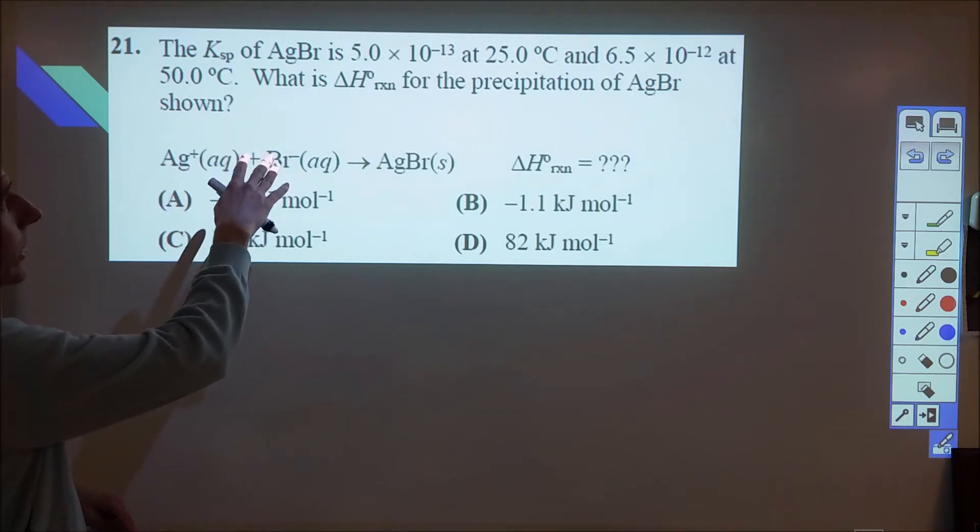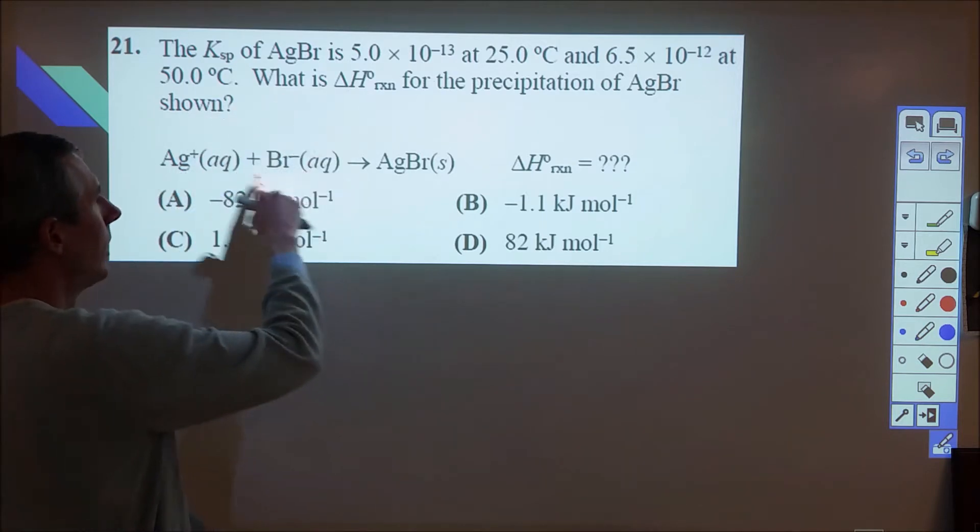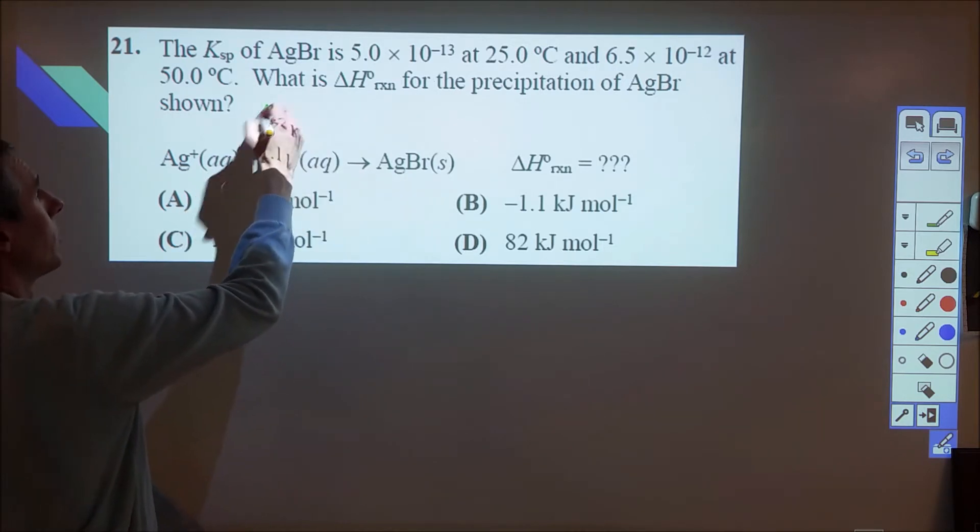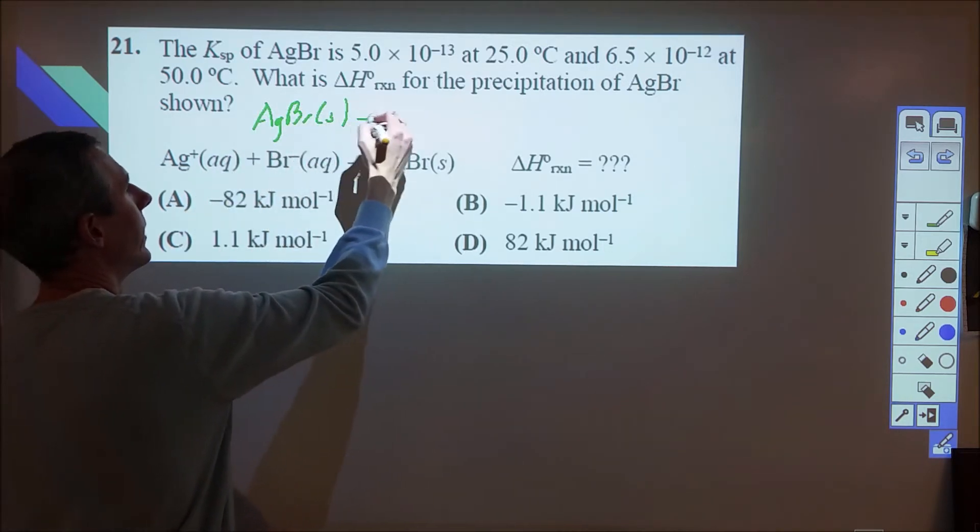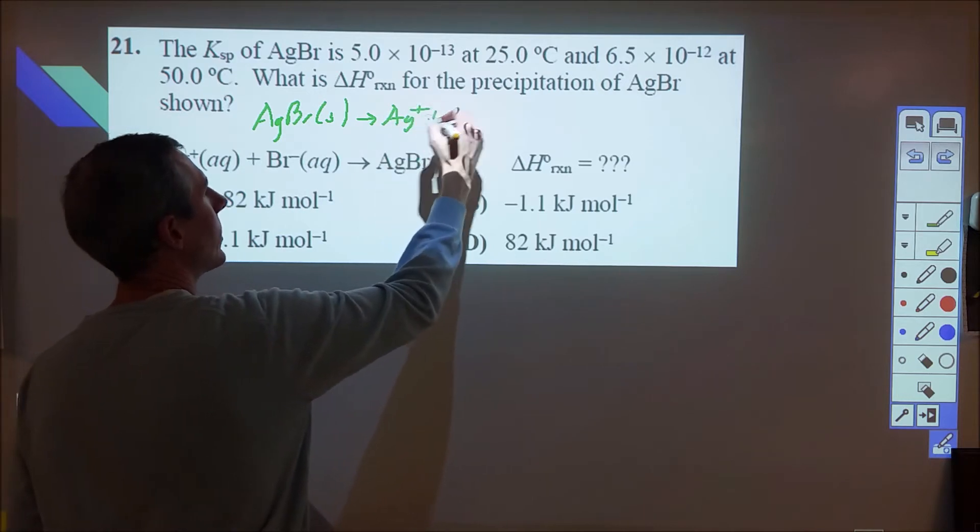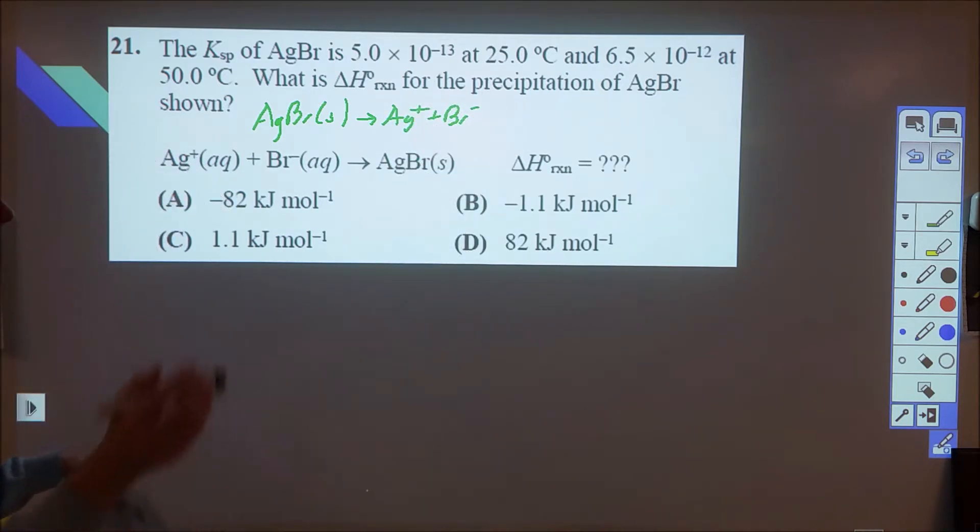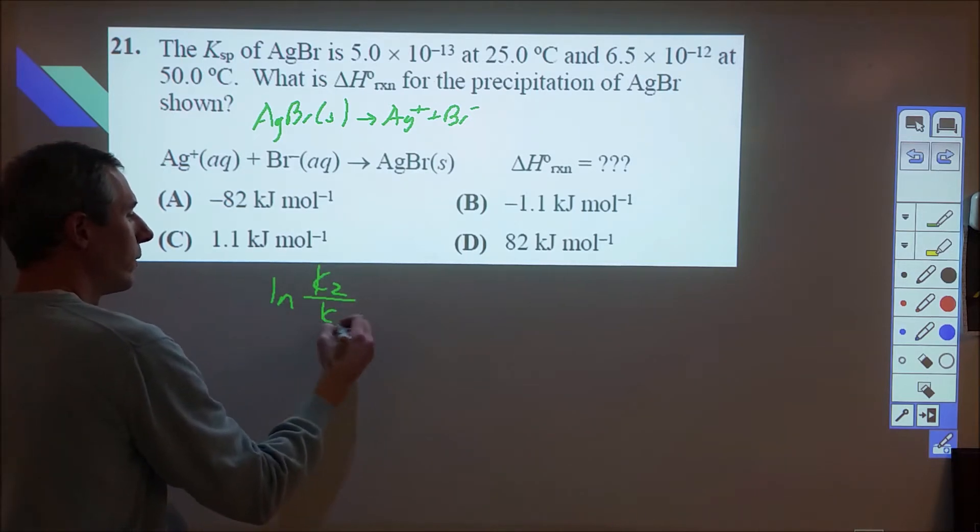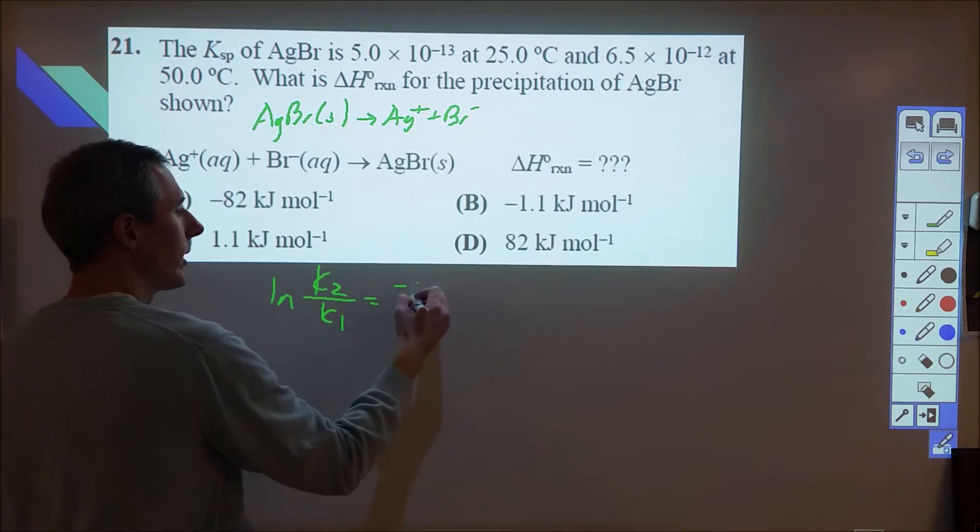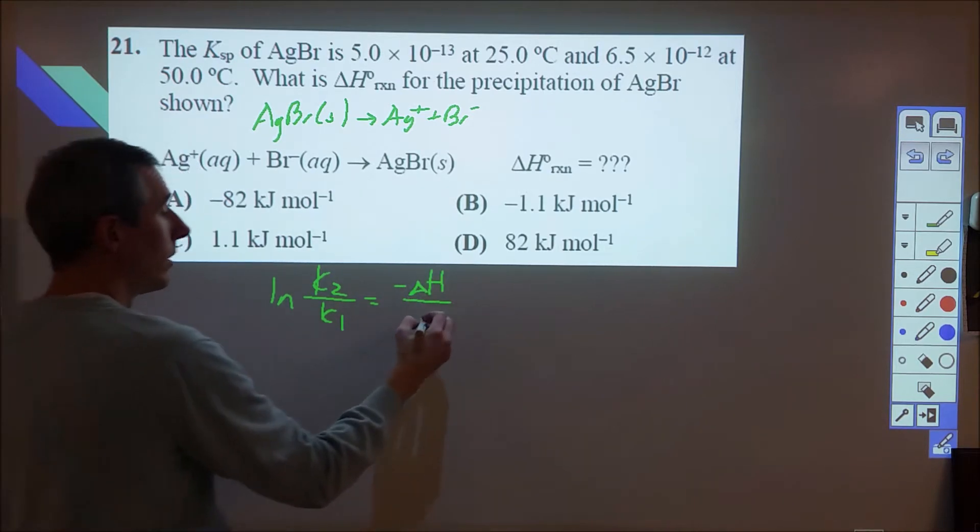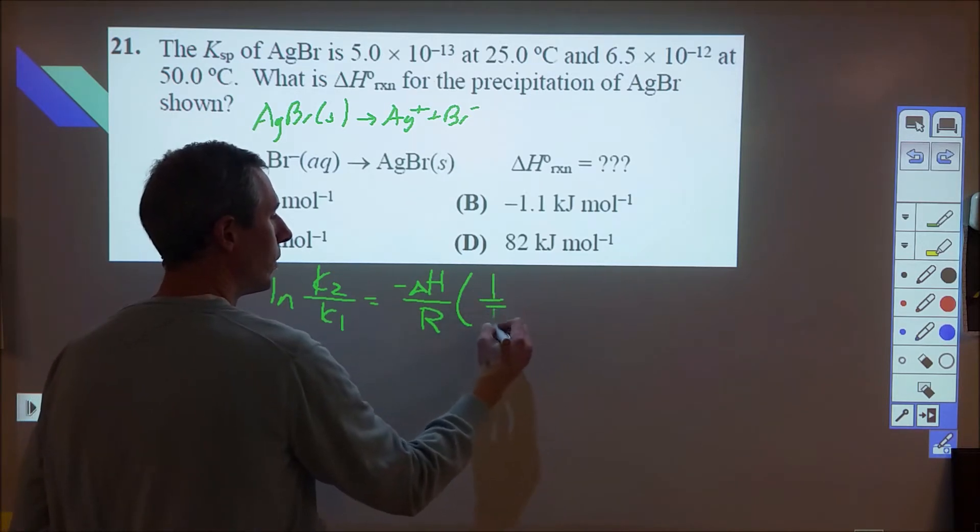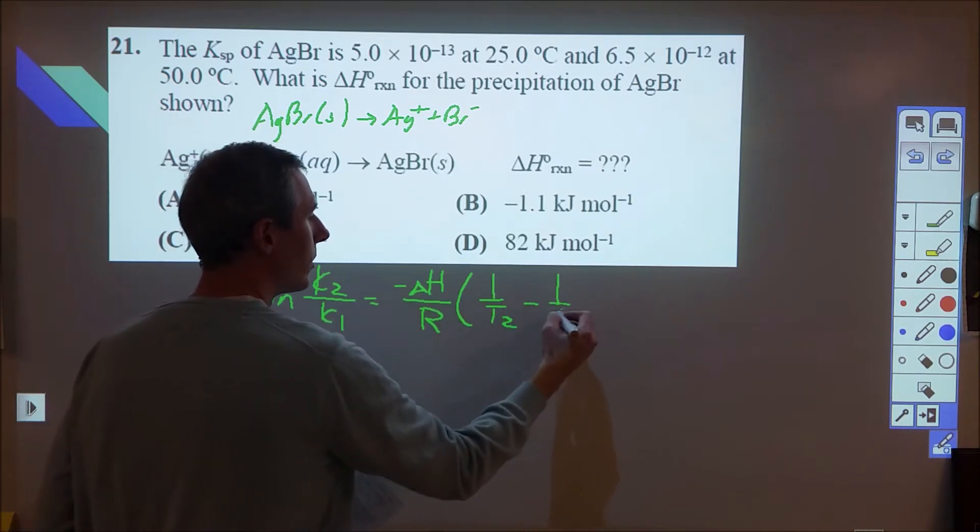Here we're looking at two different equilibrium constants at two different temperatures for the Ksp of AgBr. A little trick that's going to come up later is this is the reverse of this reaction. So the Ksp would normally start with the solid and that would then produce the ions. The equation is the natural log of K2 over K1 equals negative delta H over R times 1 over T2 minus 1 over T1, which is what we're searching for.